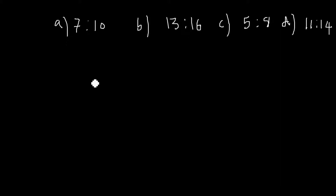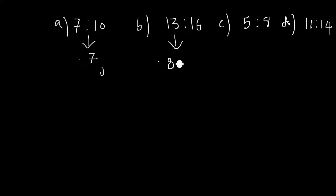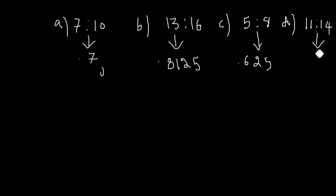Using a calculator, you can find 7 by 10 is equal to 0.7, and 13 by 16 is equal to 0.8125. It is very simple. 5 by 8 is equal to 0.625 and 11 by 14 is equal to 0.785.